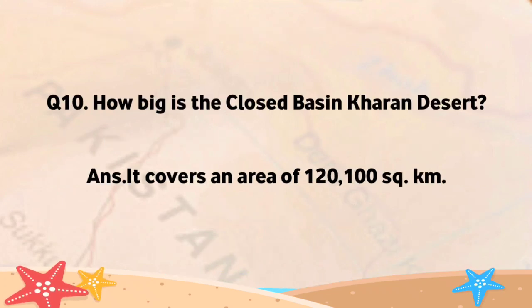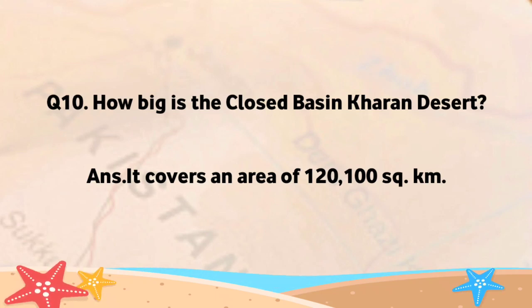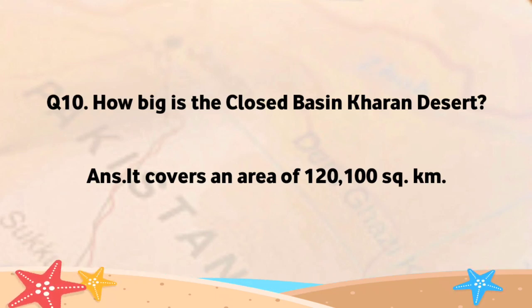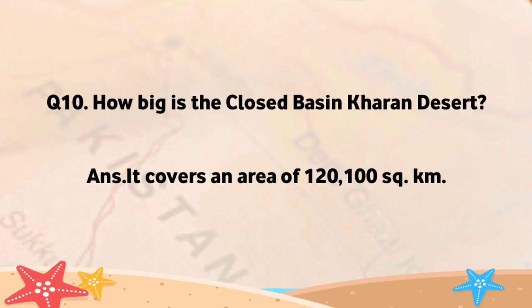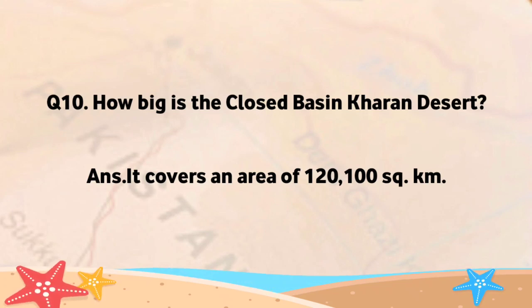How big is the Closed Basin Karan Desert? It covers an area of 120,100 square kilometers. Bandh Taas Kharaan Sahra kitna bada hai? Ye ek laag bhees hazaar ekso murabba kilometer ke rappi par mohit hai.